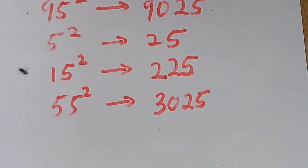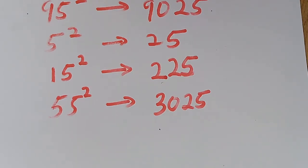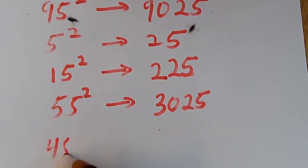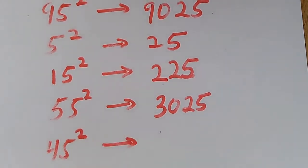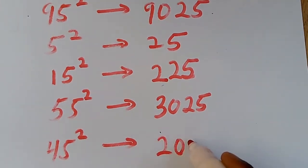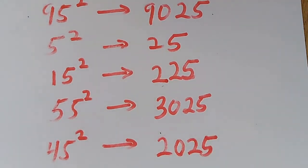Someone asked me: is that trick coming? Yes, it's coming. Let me finish up with a few examples and after that I'll tell you what I've been using to get these results. So 45 squared gives us 2025.